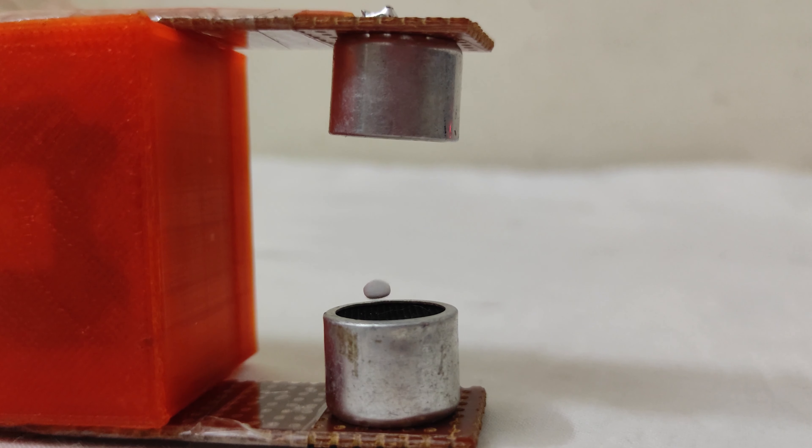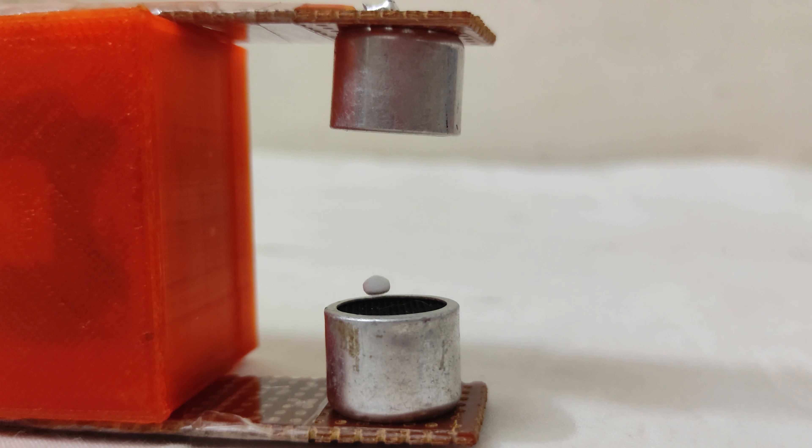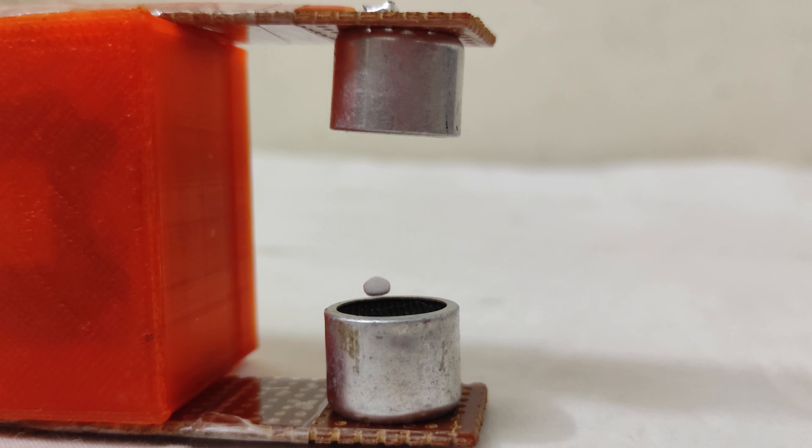After uploading the code, make a small piece of styrofoam bubble and place it between the ultrasonic modules and you can see the bubble slowly rising. This is an easy way you can make the ultrasonic levitator.